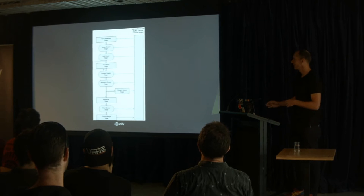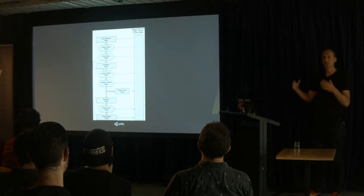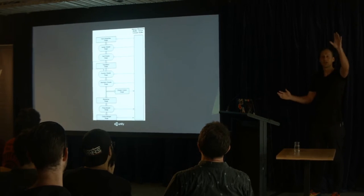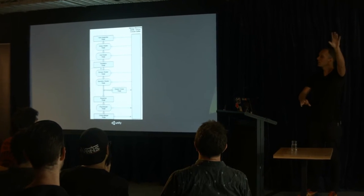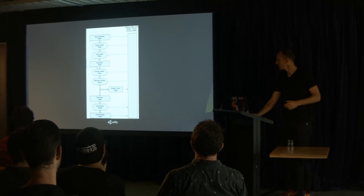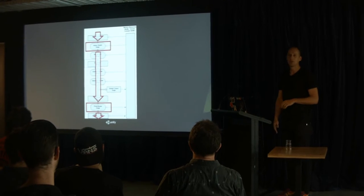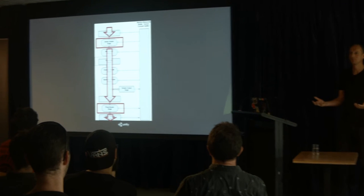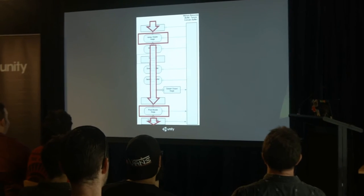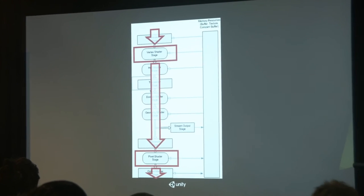We have a slightly more complicated approach. There's a graphics pipeline. We take our geometry and find out where it is on the screen and colour in pixels — we go from geometry to pixels. Today we're going to look at two stages we care about: the vertex shader and the fragment shader.